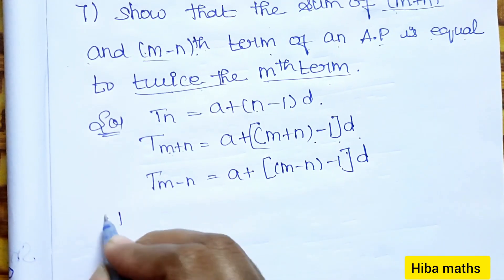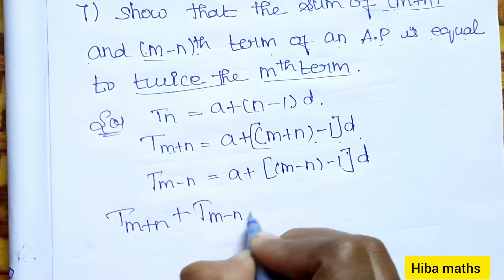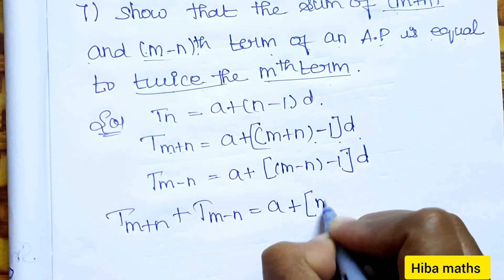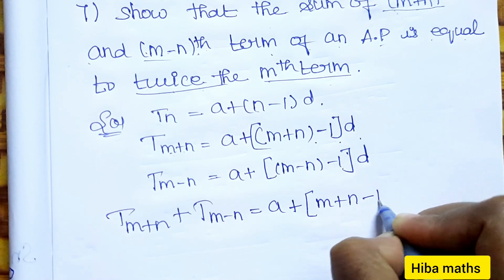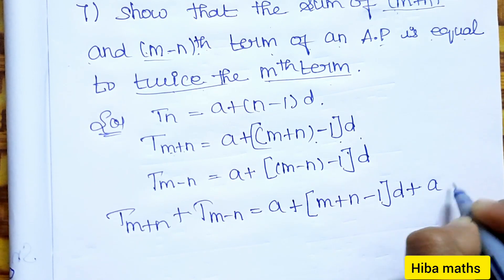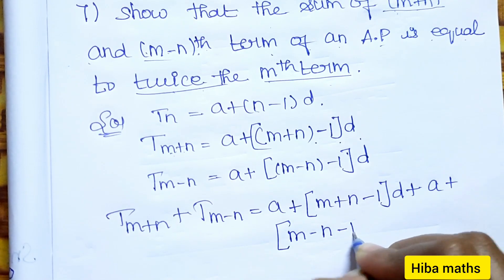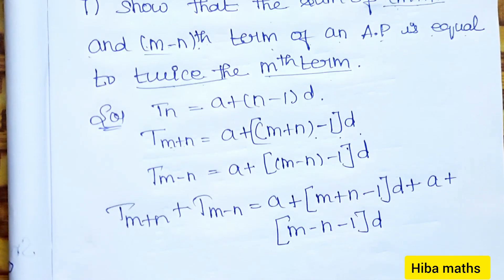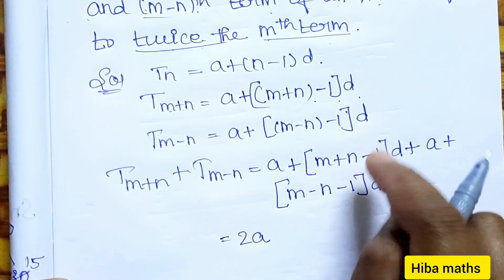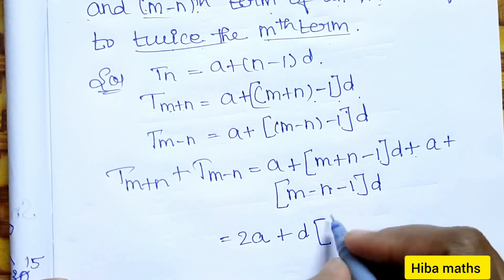Now, the sum t(m+n) plus t(m-n) equals [a plus (m+n minus 1)d] plus [a plus (m minus n minus 1)d]. Combining these two terms, we get 2a plus the d terms added together.